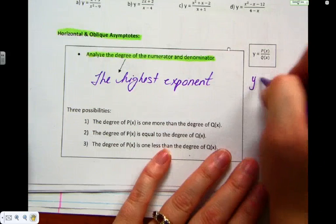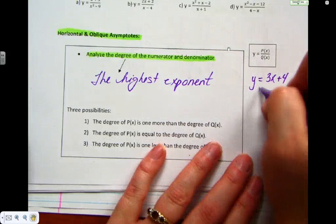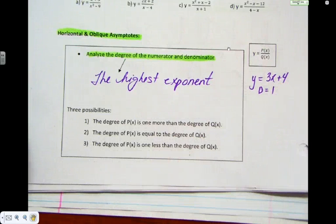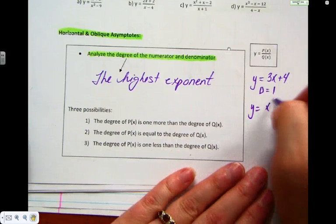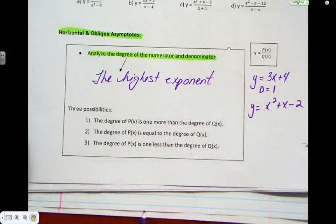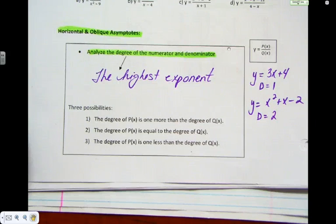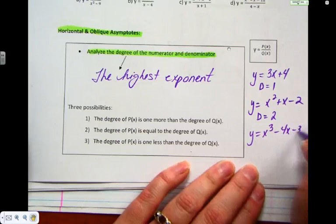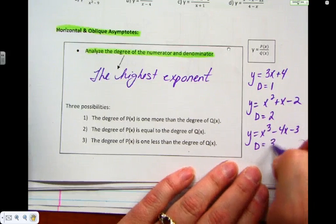Some examples: y equals 3x plus 4 has a degree of 1 — that's a first-degree polynomial. X squared plus x minus 2 has a degree of 2 — second-degree polynomial. And a cubic has degree 3 — third-degree polynomial. And then we're going to add quartics and quintics, but I can't talk about that now.